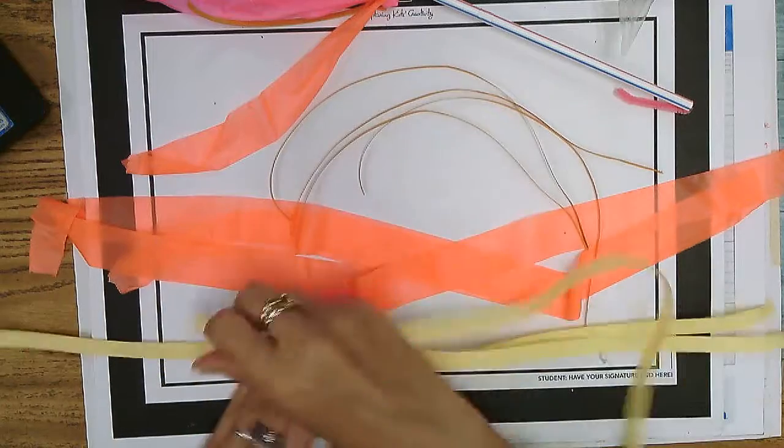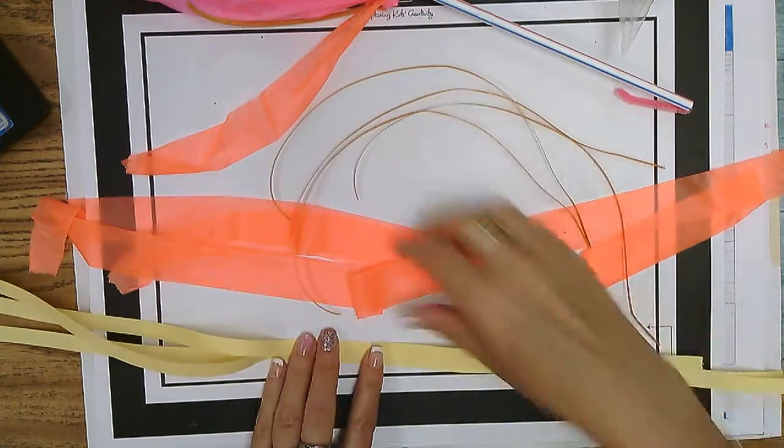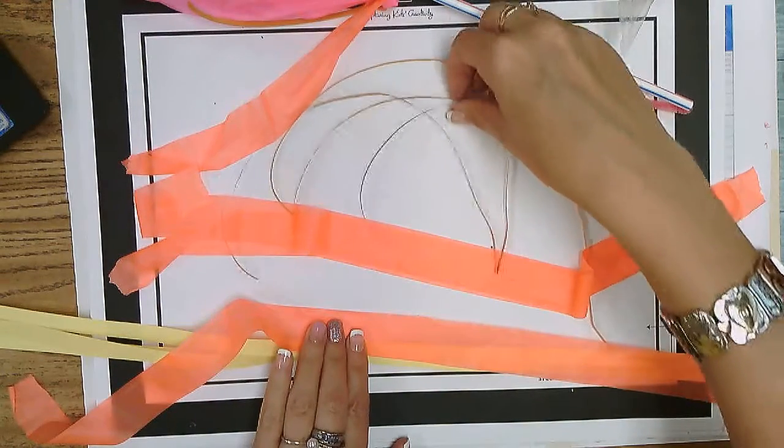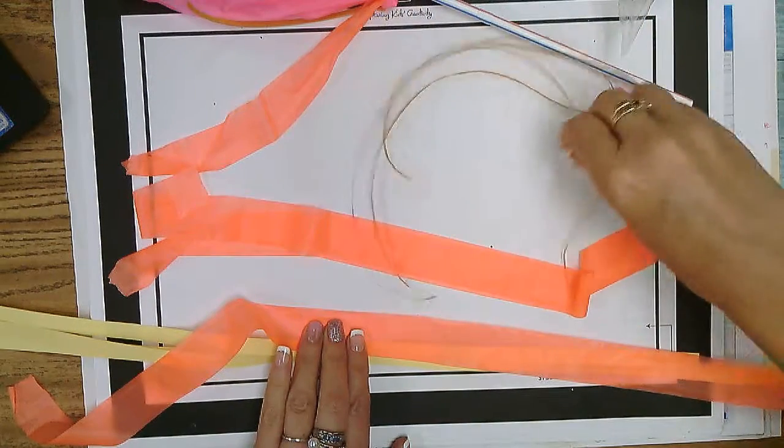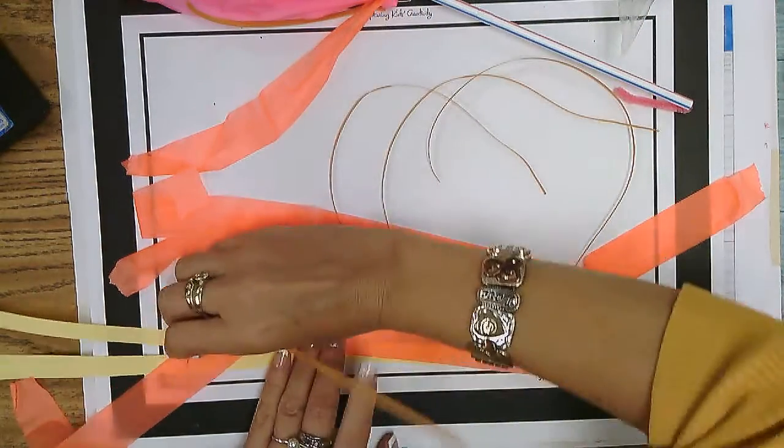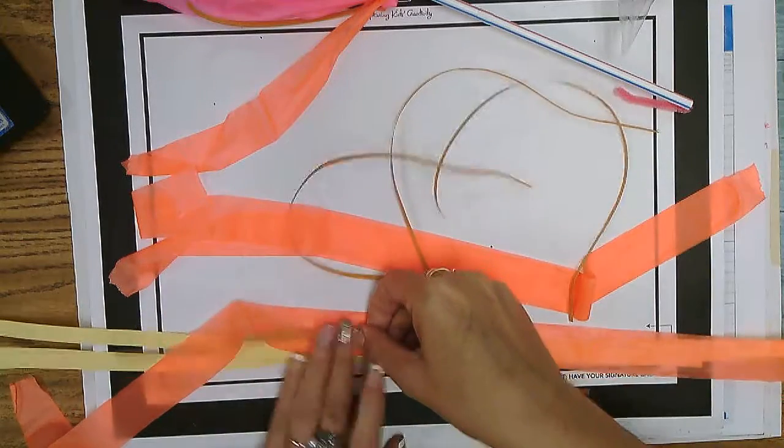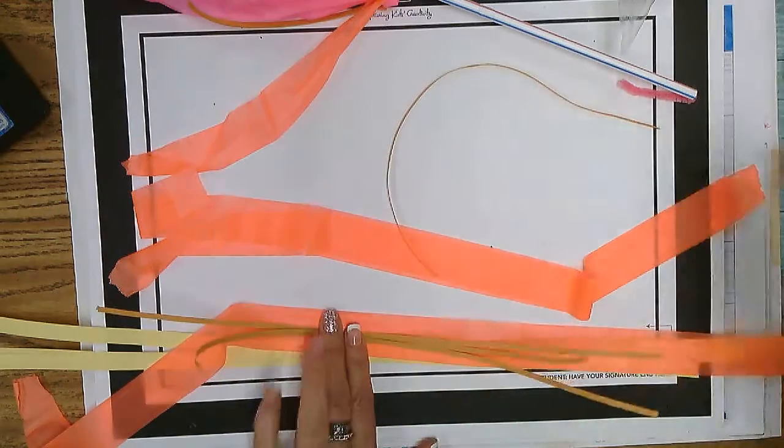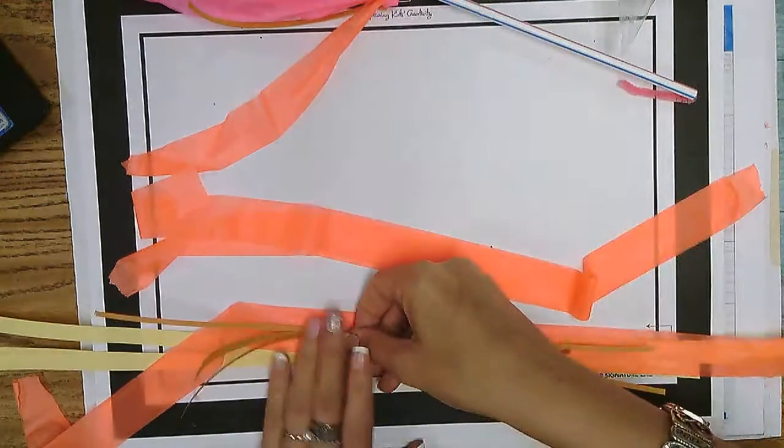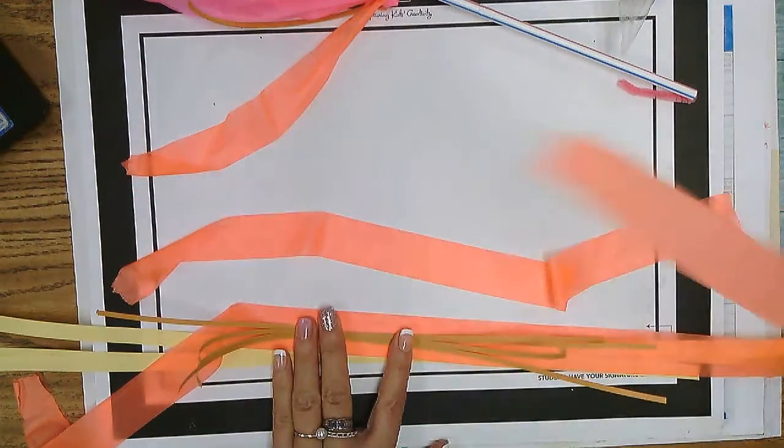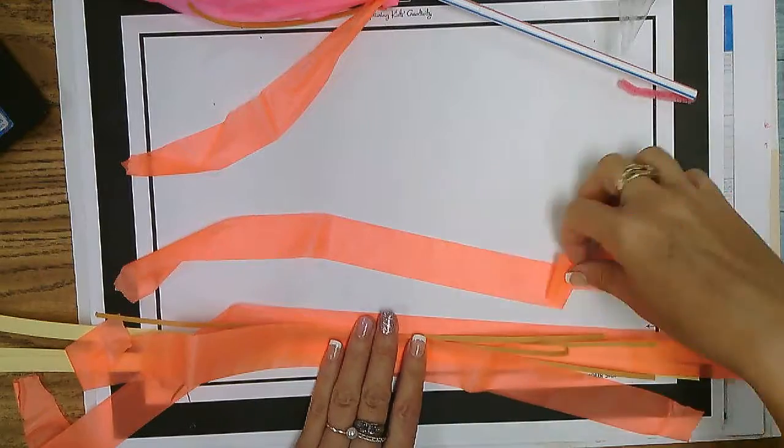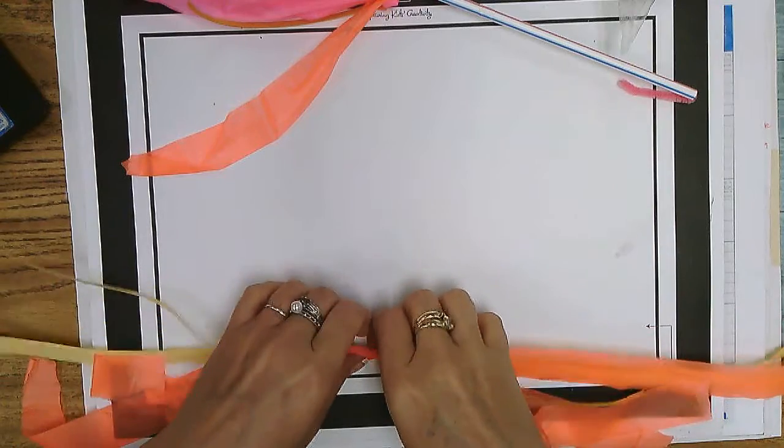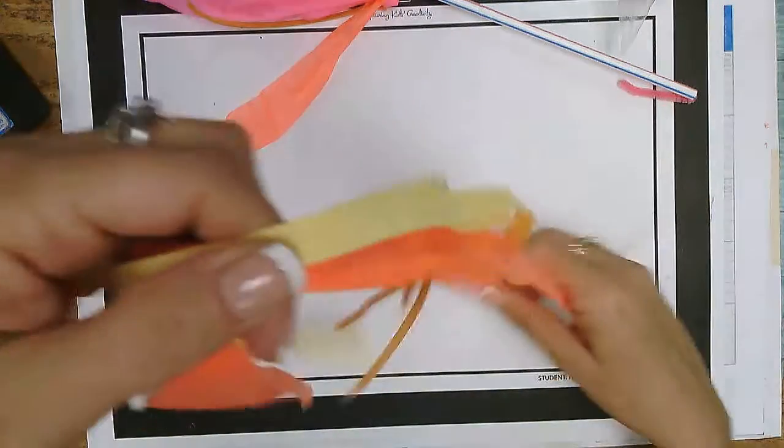So one, and then two, three. And we'll mix it up with some shorter ones. Four, five, six, seven, eight, nine. So about 10 strands of different tapes and different papers.